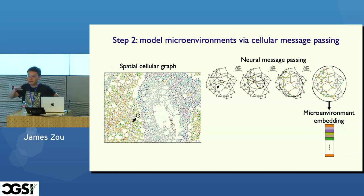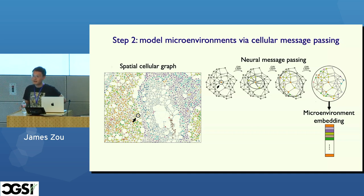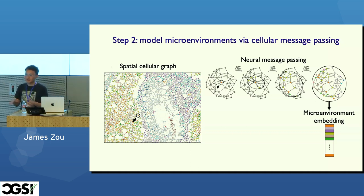On the question of 2D vs 3D: most experimental methods for both transcriptomics and proteomics are currently capturing 2D slices. To get 3D information, researchers collect consecutive slices from biopsy samples and do 2D imaging and transcriptomics measurements for each slice. There are newer experimental ways to get 3D information, but those are still at an early stage — most data being collected are 2D slices.